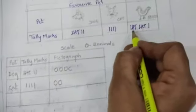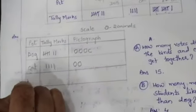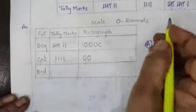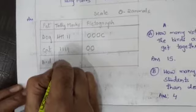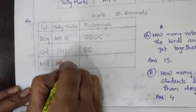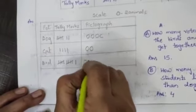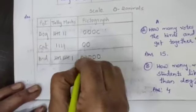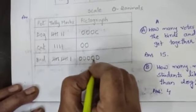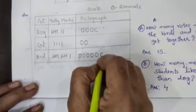For bird, how many are there? 11. B-I-R-D bird. How many? 11. So each circle is 1, 2, 3, 4, 5. 5 circles means how many? 10. So for 11, you have to draw half circle. Okay. I hope you understood.